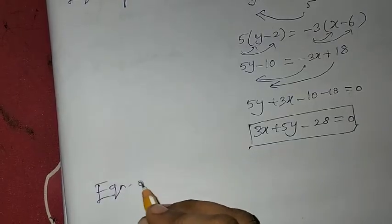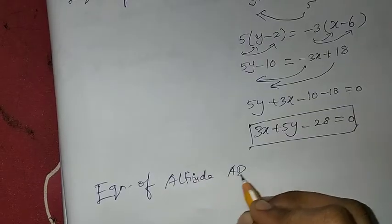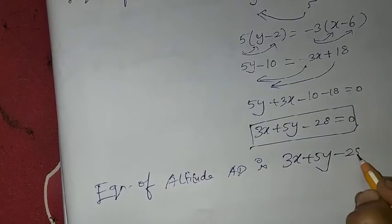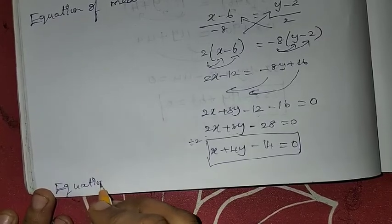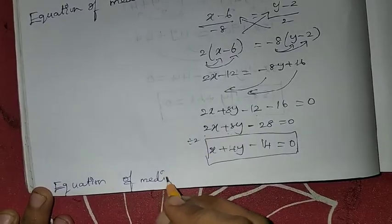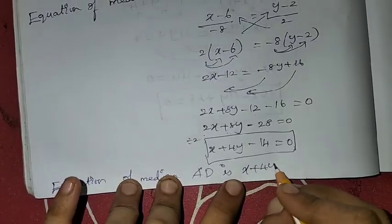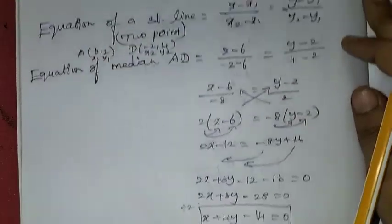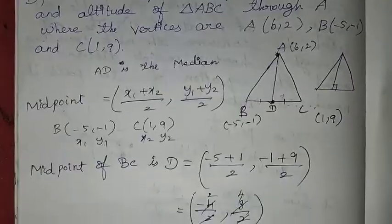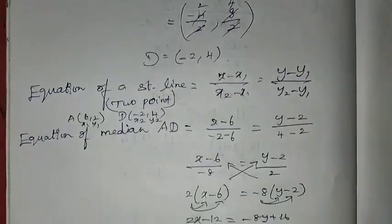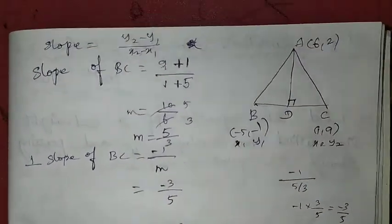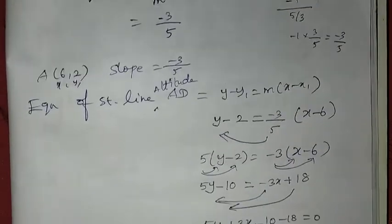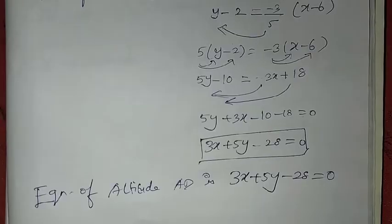Equation of altitude AD is 3x minus 5y minus 28 equals 0. Median AD is x plus 4y minus 14 equals 0. Remember: median uses midpoint, altitude uses perpendicular slope. Thank you so much for watching, students. Bye-bye.